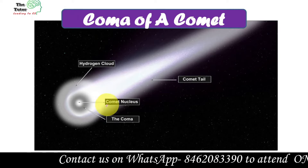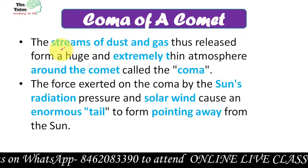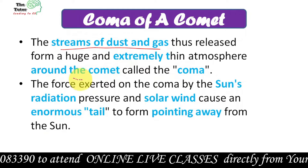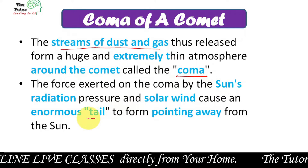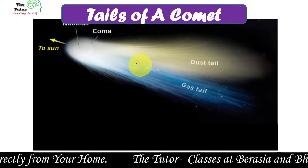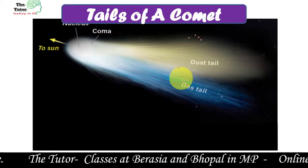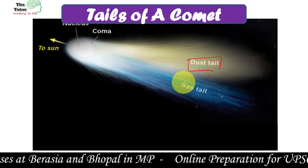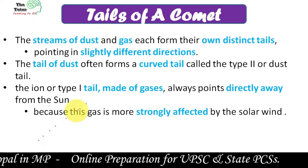A comet has a tail also, and this is called the coma. Streams of dust and gas go beyond its nucleus and are known as the coma — sometimes also called its tail. If we talk about the tails, they are the larger part in comparison to the coma, and there are two in number. One of them is made up of dust and another one is made up of gas. So we have two tails of a comet.